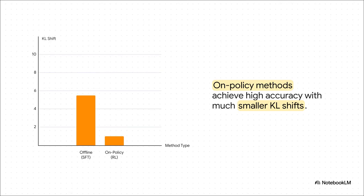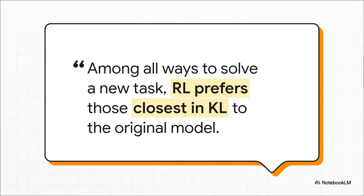This chart shows it all. The KL shift, how much the model's behavior changes, is just way, way lower for on policy methods like RL. They're just inherently more conservative. They don't make big drastic changes because they're learning from their own current point of view. This all leads to the central idea, which the researchers brilliantly named RL's Razor.